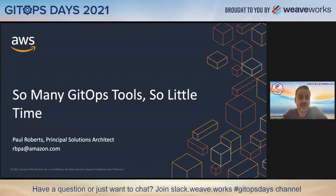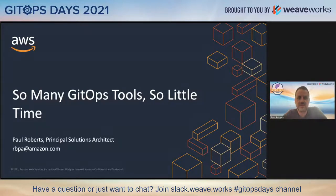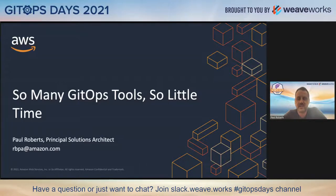Good afternoon, good evening, everybody. My name is Paul Roberts. I'm a principal architect here at AWS. I work with some really interesting customers and some of the most influential companies in the world. I've been working with the open source community for some time, back even before Kubernetes really got off the ground and GitOps. I was doing a lot of work with OpenStack. Today, I actually sit on the steering committee for the Spinnaker project, so I do a lot of work with the Netflix folks. I'm incredibly excited to be speaking with everyone today.